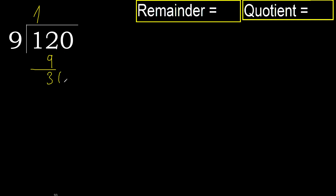Next, bring down: 30. 9 multiplied by 4 is greater, so multiply by 3: 27. Subtract 27 from 30.